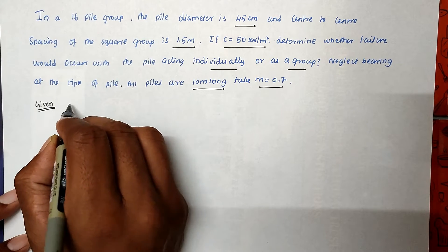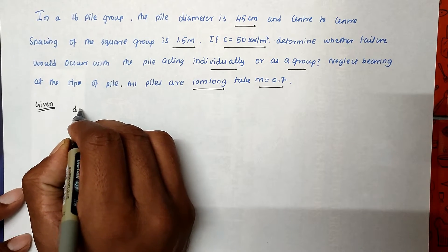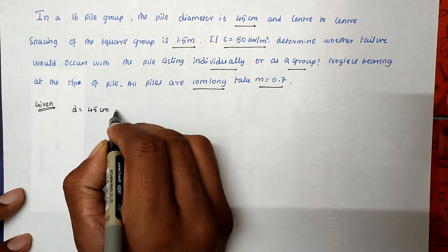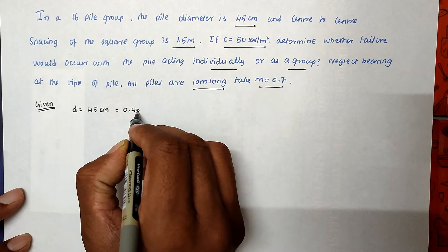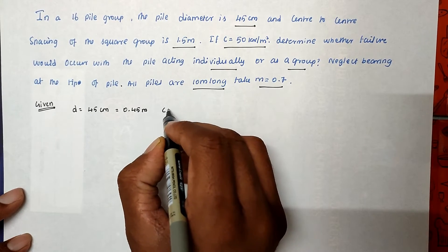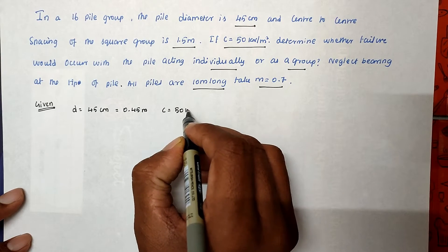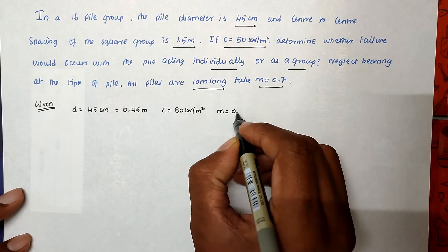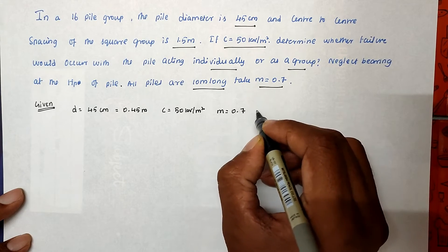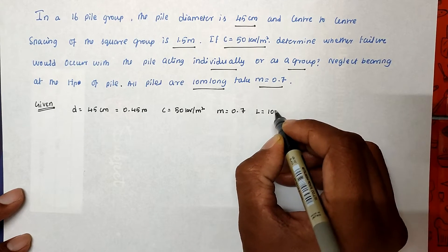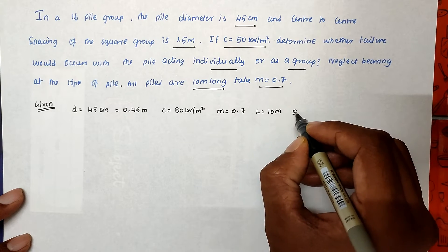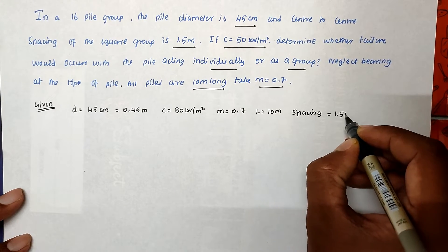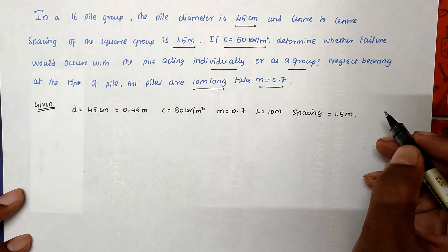So the given values are: pile diameter = 45 cm = 0.45 m, c = 50 kN/m², m = 0.7, L = 10 m, and spacing = 1.5 m.